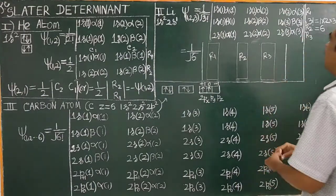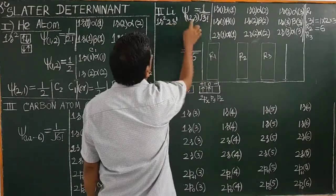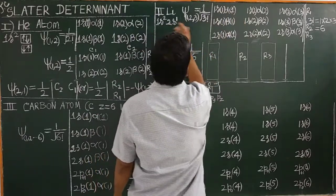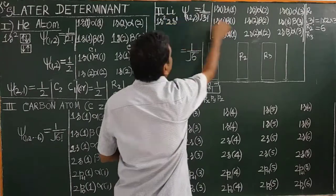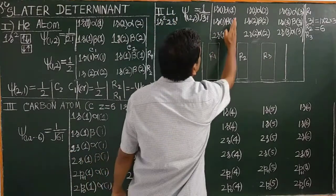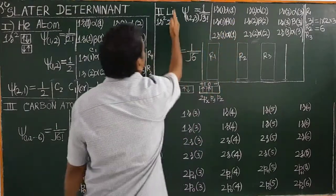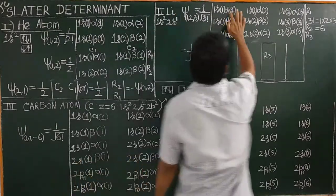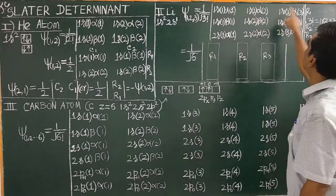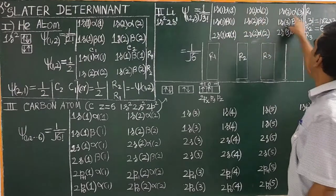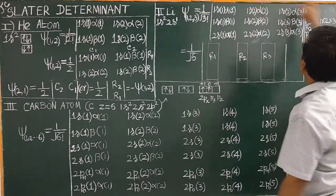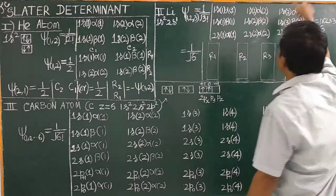There are three possibilities. Similarly, alpha(1) — the first electron is in alpha spin, upward spin — and in the same orbital beta(1). There is only one electron in 2s, therefore it is in the upward spin. Similarly, alpha(2), beta(2), alpha(2), and for the third electron alpha(3), beta(3), alpha(3). There are three rows and three columns.